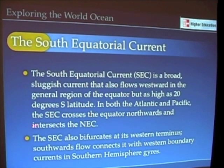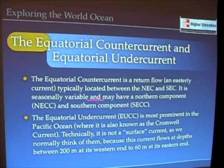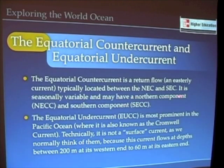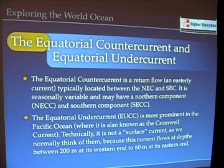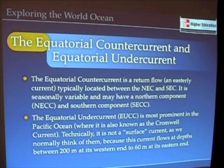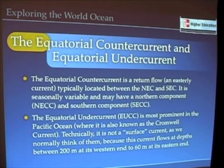Some of it flows south, and some of it flows north into the equatorial counter current. This is a return flow that brings water that has moved from east to west back towards the east. It's seasonally variable and may have a north and south component. The equatorial counter current in the south Pacific Ocean includes the equatorial undercurrent, which is technically not a surface current — it's sometimes called the Cromwell Current, named after Cromwell who discovered this flow of water underneath the surface at depths between 200 meters at its western end and 60 meters at its eastern end, a current that climbs the slope between the western and eastern sides of the Pacific Ocean.